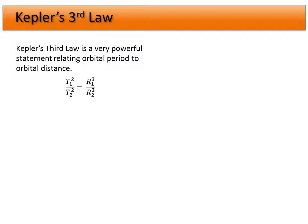Here, r is the orbital distance — the semi-major axis — and T is the orbital period. The typical way to apply Kepler's third law is to relate one orbit at one radius to a second orbit at a second radius. For example, if we know Earth's orbital radius and we observe Mars's orbital period, we can calculate the orbital distance of Mars.